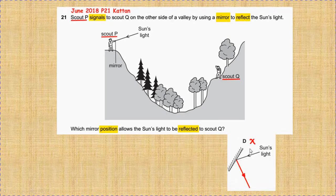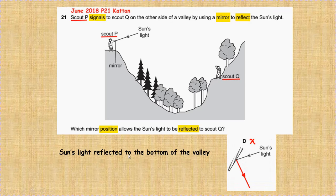For D, the reflected light ray goes to the bottom of the valley.